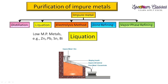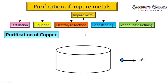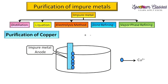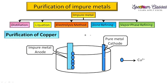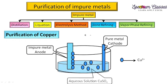The next method is the electrolysis method. Here we discuss the purification of copper. In this setup, the impure metal acts as the anode, and a thin rod of pure metal acts as the cathode. The solution used is a salt of that metal — in this case, copper sulfate. Copper atoms are present at the anode and copper ions are present in the solution.